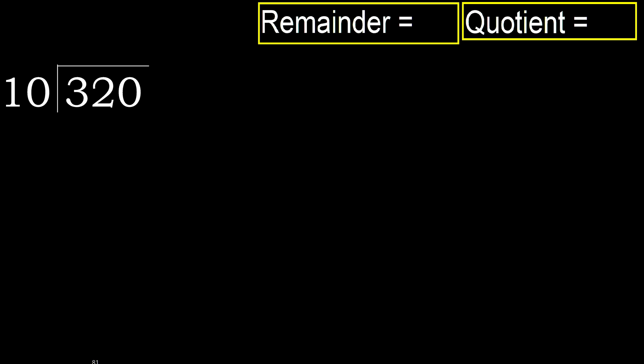320 divided by 10. 3 is less, therefore next: 32 is not less. Therefore with 32, 10 multiplied by which number is nearest to 32 but not greater? 10 multiplied by 4 is 40 — 40 is greater. 10 multiplied by 3 is 30 — 30 is not greater.